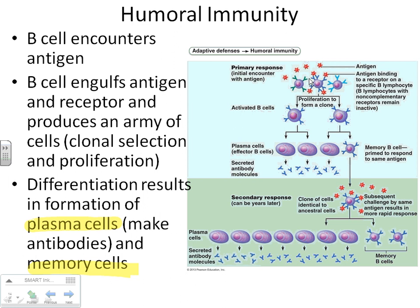That one little piece can't give you meningitis, but your B cells can be activated by it. Your B cells proliferate, make some antibodies, and most importantly, make a memory cell specific against that one piece of bacteria. So if you do come in contact with the actual bacteria two years later, your memory cell recognizes it immediately, makes your army of antibodies, and destroys that bacteria before you can get meningitis.